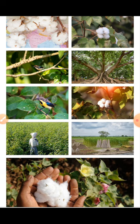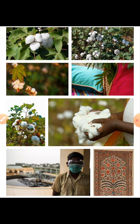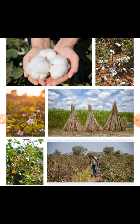Cotton is a kharif crop which requires 6 to 8 months to mature. The time of sowing and harvesting differs in different parts of the country depending upon the climatic conditions. In Punjab and Haryana, it is sown in April-May and harvested in December-January, before winter frost can damage the crop. In the peninsular part of India, it is sown up to October and harvested between January and May, as there is no danger of winter frost in these areas.